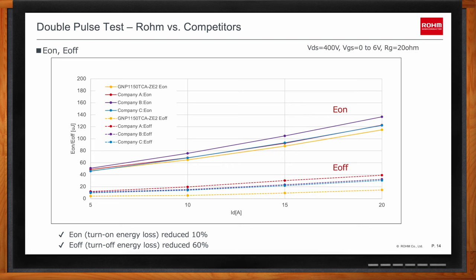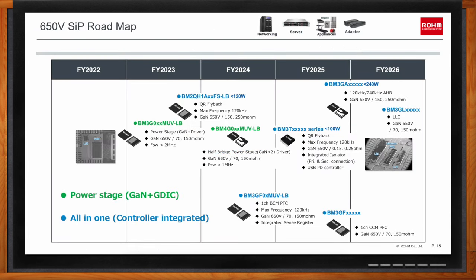Rome is actively developing system-in-package products. You can see a wide variety of solutions across the roadmap. The leftmost is a power stage with a gate driver integrated with the 650-volt GaN transistors. Just to the right is a half bridge power stage including two GaN transistors. There are also several IP designs like the QR flyback design under development that will include the controller, gate driver, and 650-volt GaN transistor in a single package.